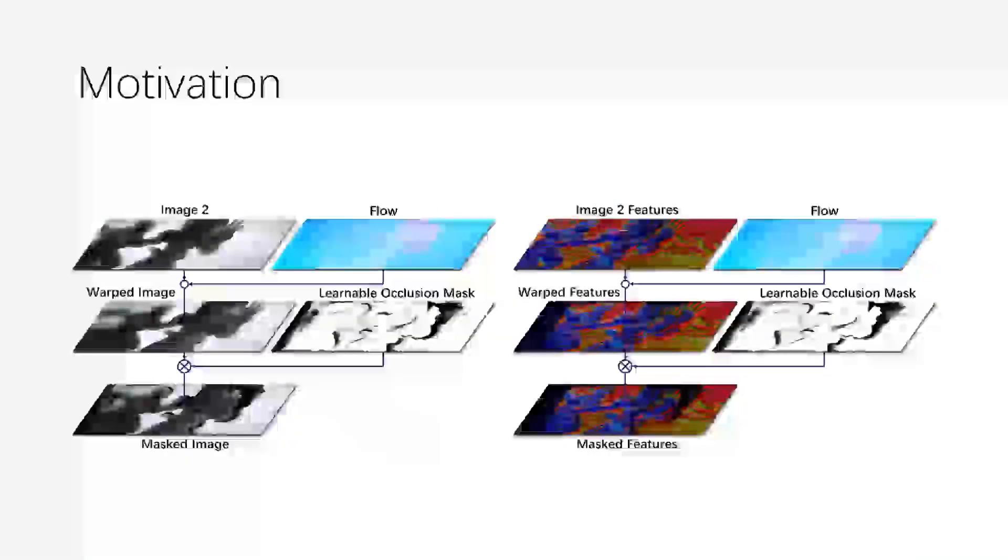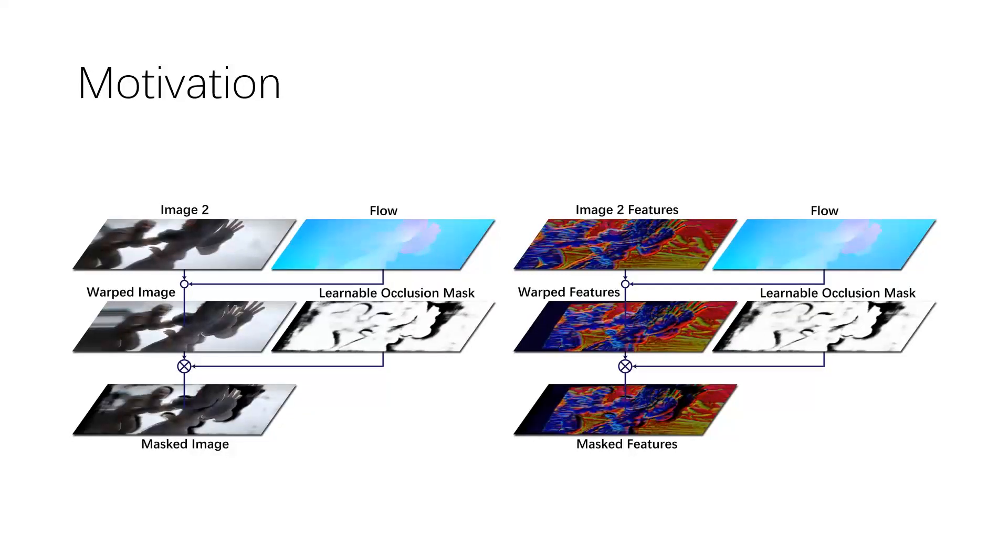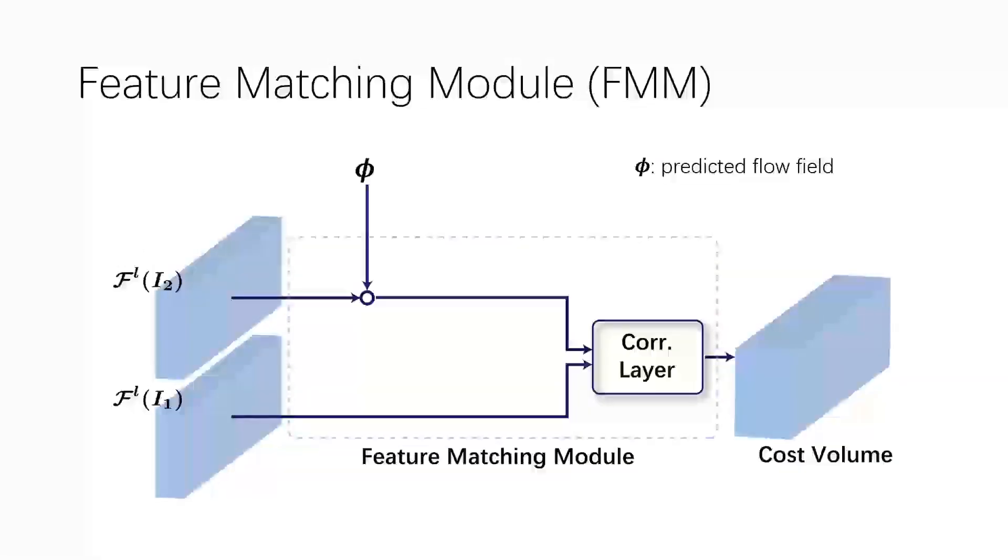We answer this positively by showing that the network can indeed learn to mask such areas without any explicit supervision. We first review the plain feature matching module as used in PwCNet, consisting of the warping operation and the correlation layer. Here, phi denotes the predicted flow field.